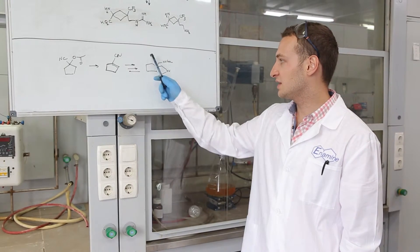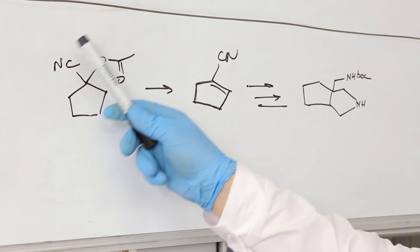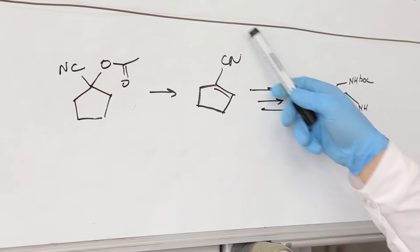Another example is a synthesis of this monoprotected alkyldiamine from acylated cyanohydrin through pyrolysis generated intermediate.